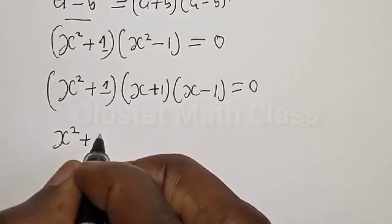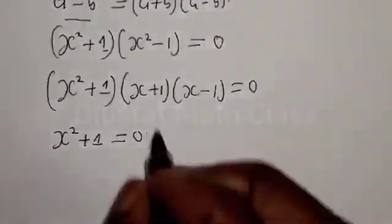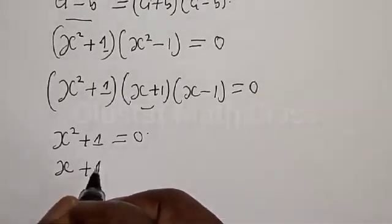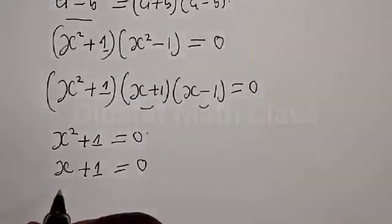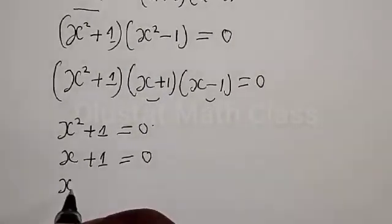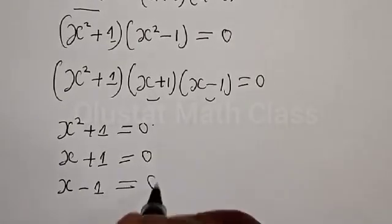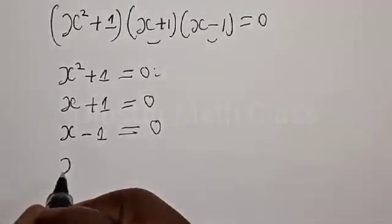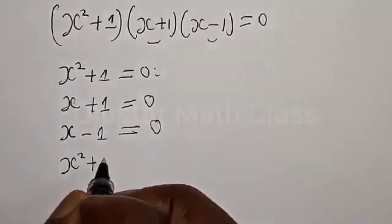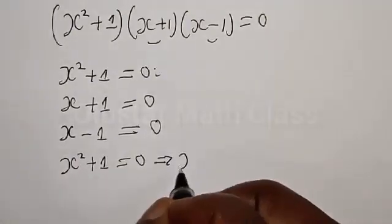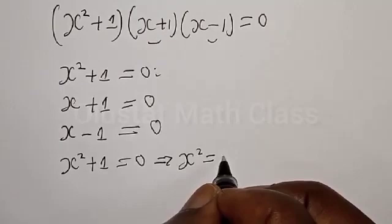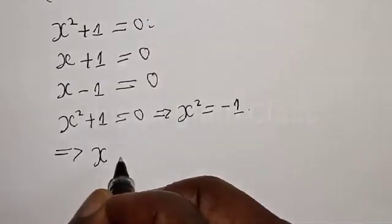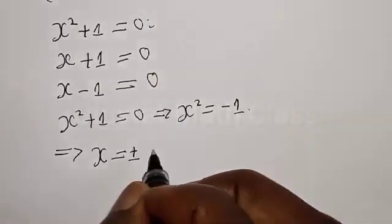From the first factor we have s squared plus 1 equal to 0. From the second factor, s plus 1 is equal to 0. From the third factor, s minus 1 is equal to 0. Now let's solve: for s squared plus 1 equal to 0, we have s squared is equal to minus 1, which can be expressed as s is equal to plus or minus the square root of minus 1.